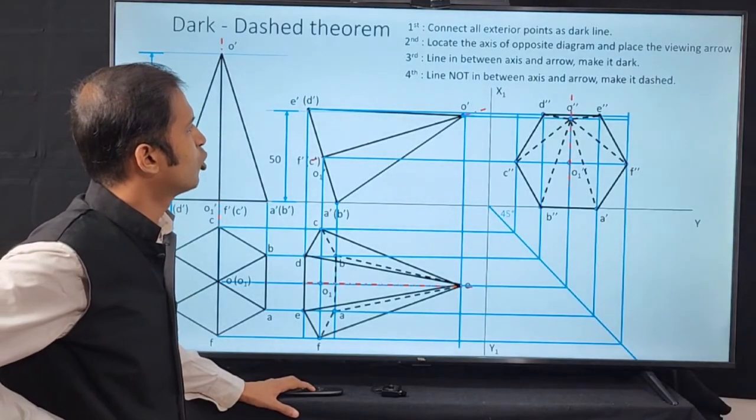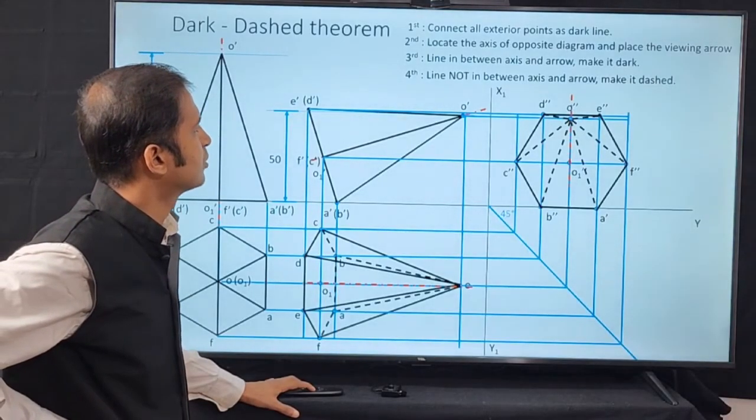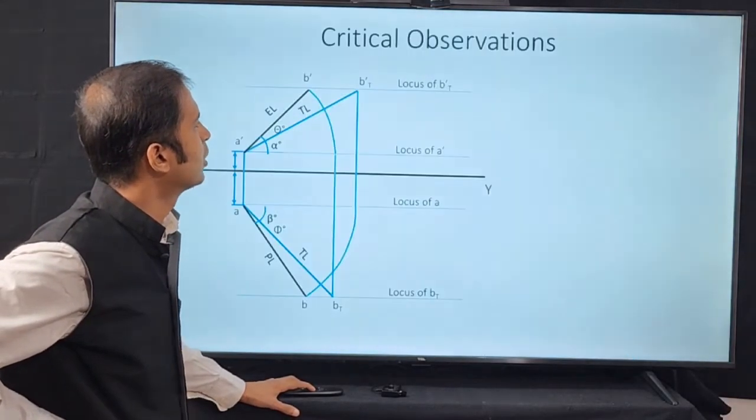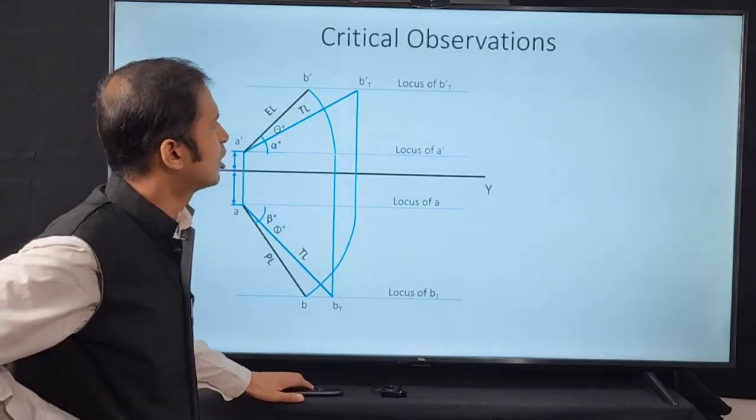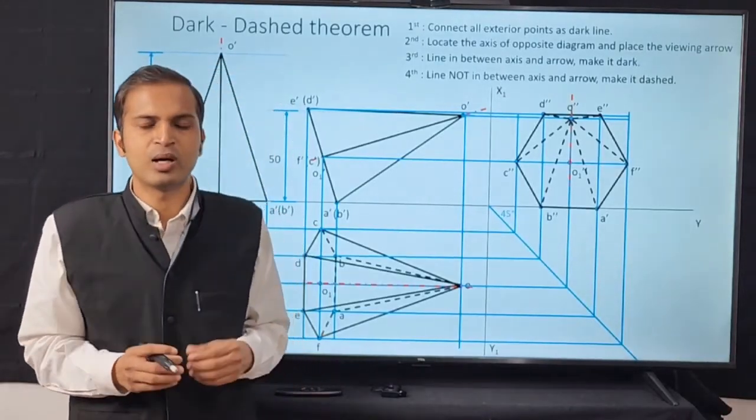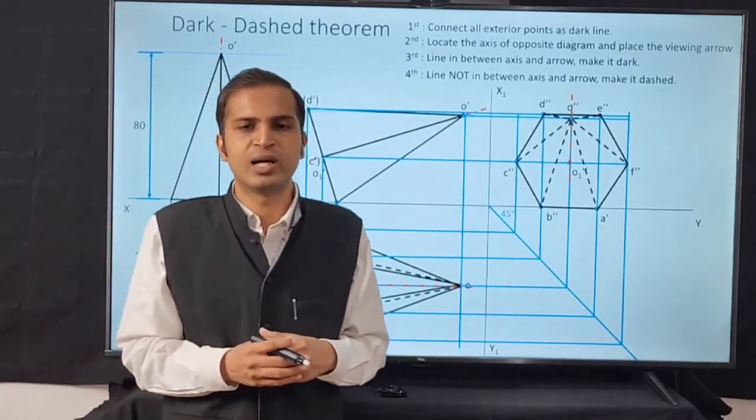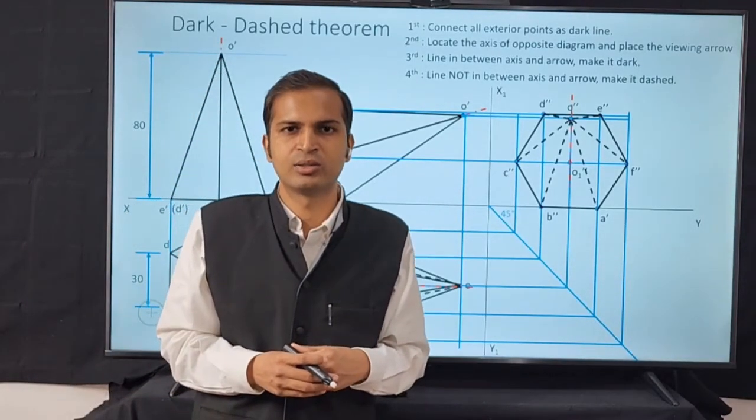And finally we mark the axis line. This completes the drawing of dark and dashed lines for the projection of solids.